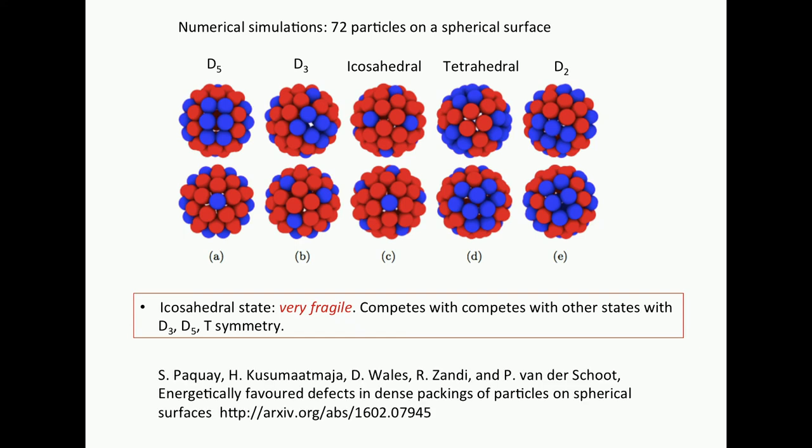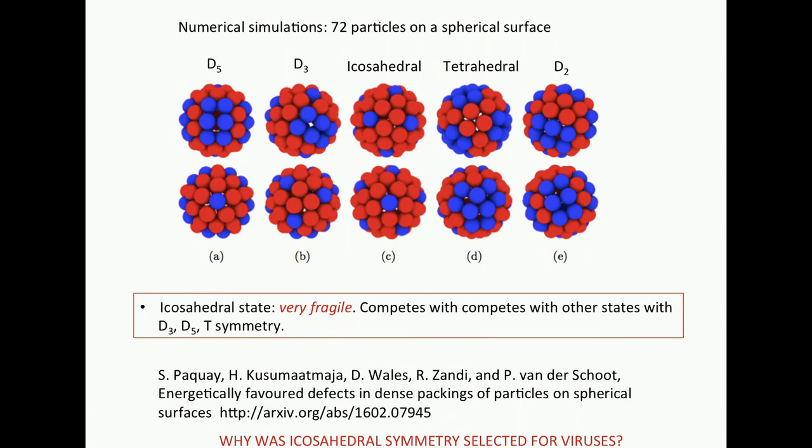Why was icosahedral symmetry selected for viruses? It's not just free energy, because the icosahedral state is just a little sliver of stability for this 72-particle structure. So this tells us that icosahedral states are quite delicate. Roya and Bill and myself showed that you can further stabilize them if you allow spheres of two sizes, smaller and bigger. And if you just tune the ratio right, you can stay. But there must be a reason why icosahedral symmetry was selected.